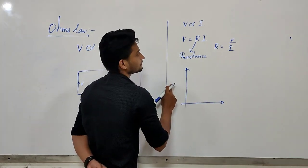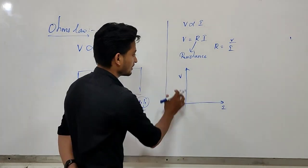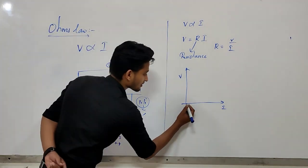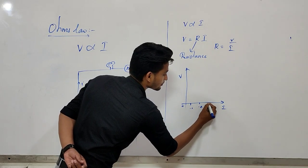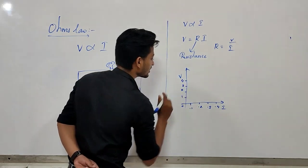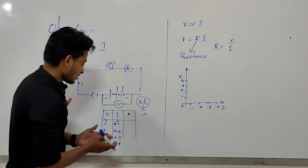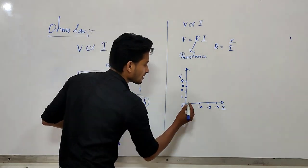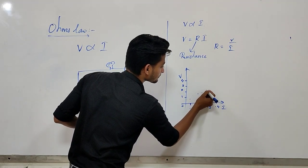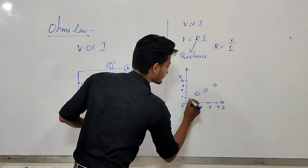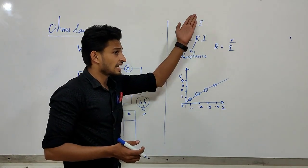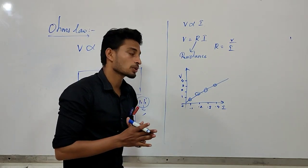In the graph, we have potential difference on the y-axis and current on the x-axis. The current values are 0.1, 0.2, 0.3, 0.4 and the potential difference values are 1, 2, 3, 4. We plot the points and get a straight-line graph, which confirms that the potential difference is directly proportional to current. That is why the graph is linear.